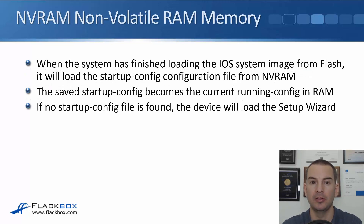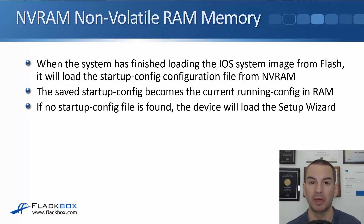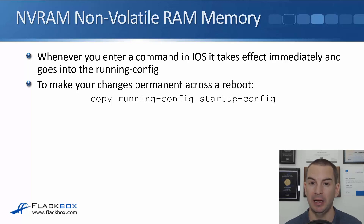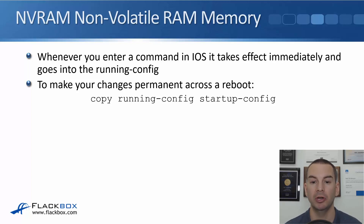The next type of memory is NVRAM. When the system has finished loading the IOS system image from flash, it will then load the startup config configuration file from NVRAM. The saved startup config then becomes the current running config in RAM. If no startup config file is found, the system will load the setup wizard — this happens after a factory reset or on a brand-new device. Whenever you enter a command in IOS, it takes effect immediately in the running config in RAM. To make changes permanent across a reboot, use the 'copy running-config startup-config' command, which saves it into NVRAM.